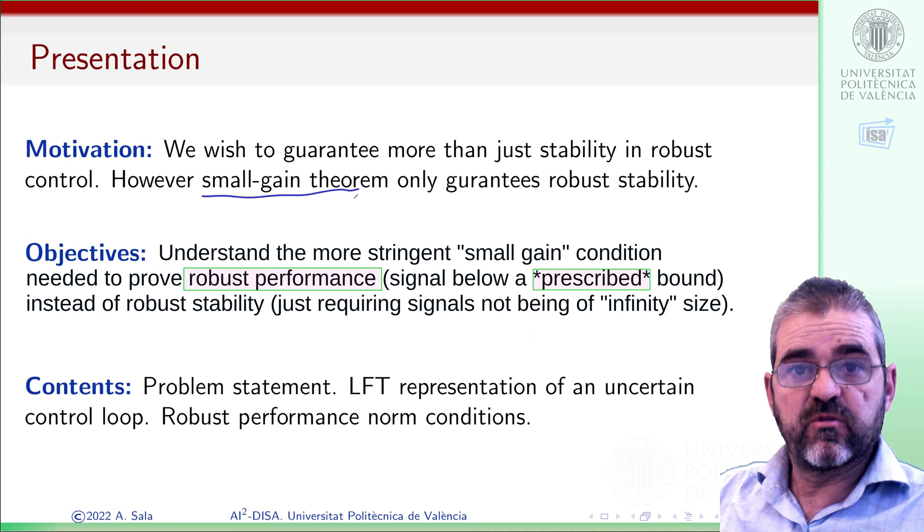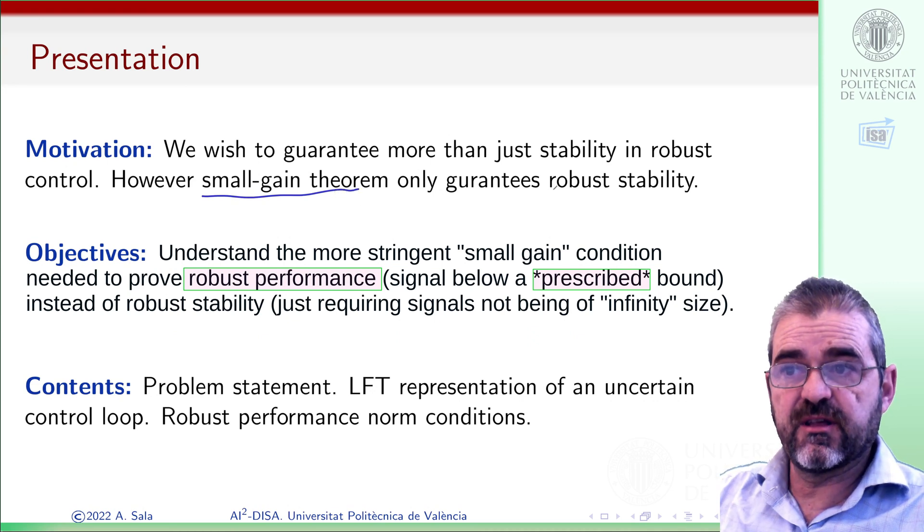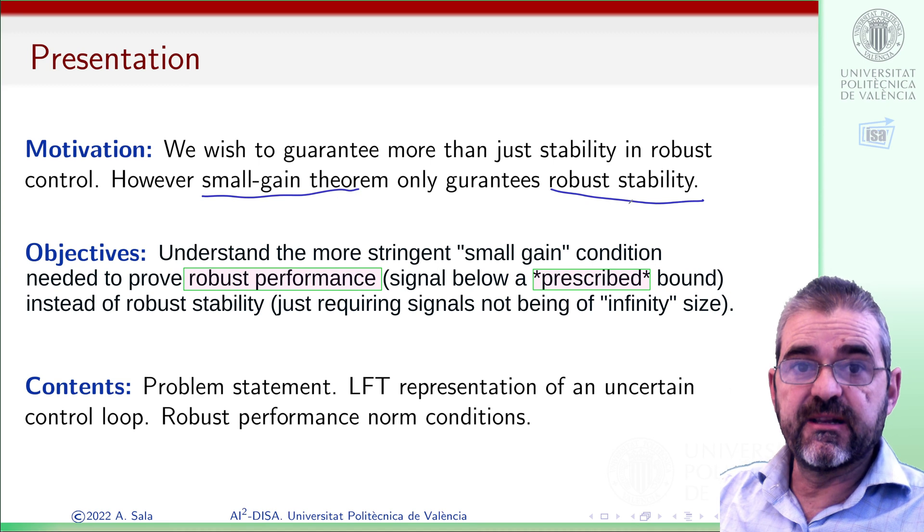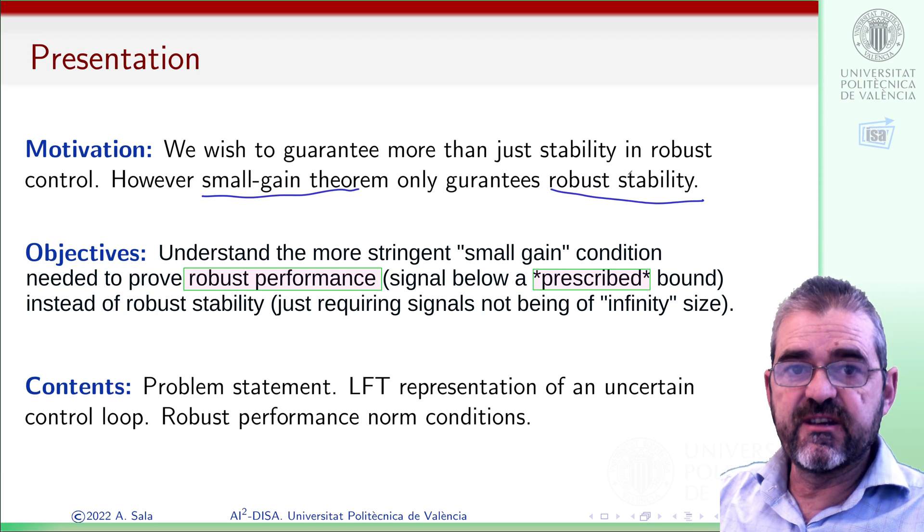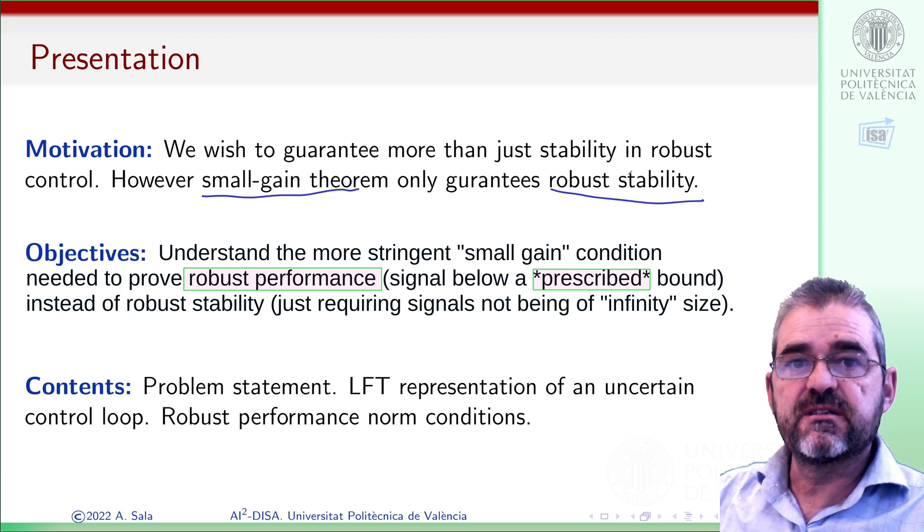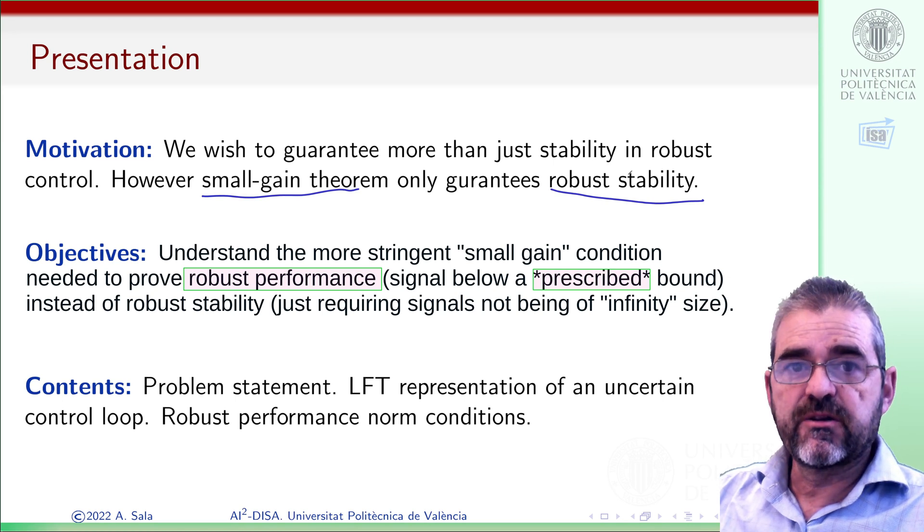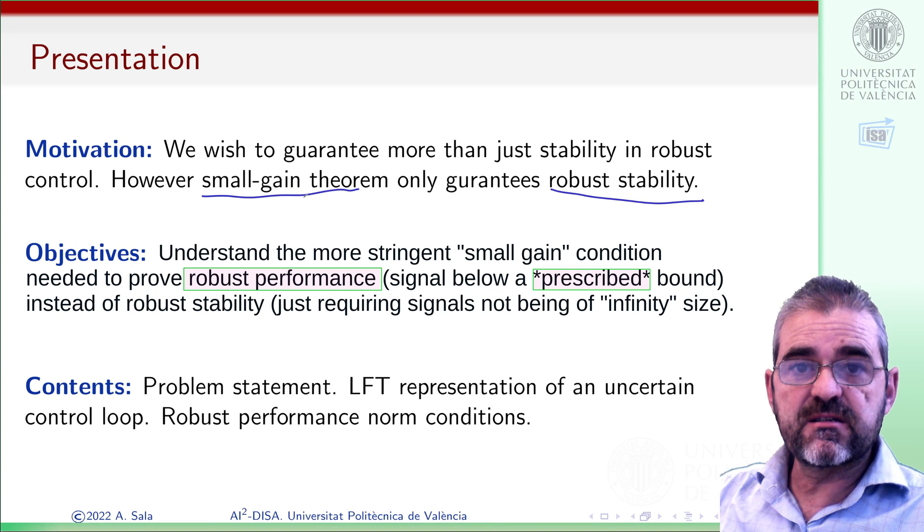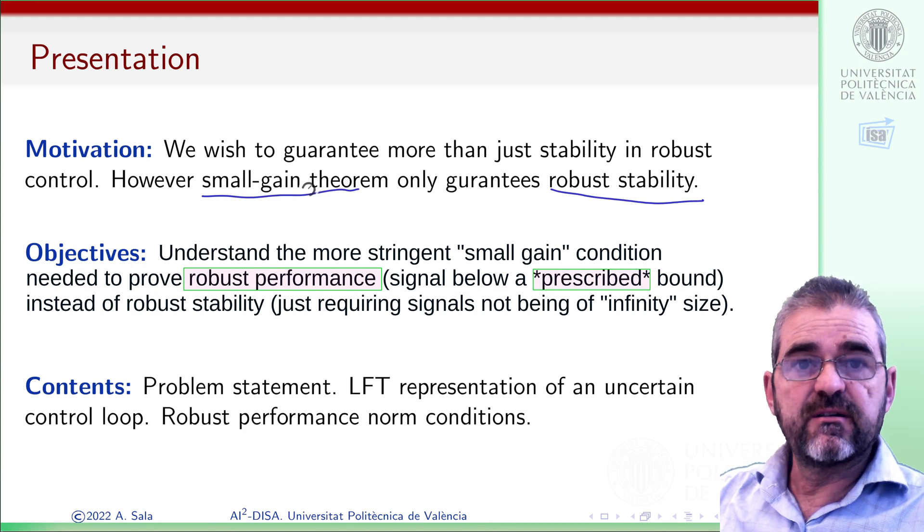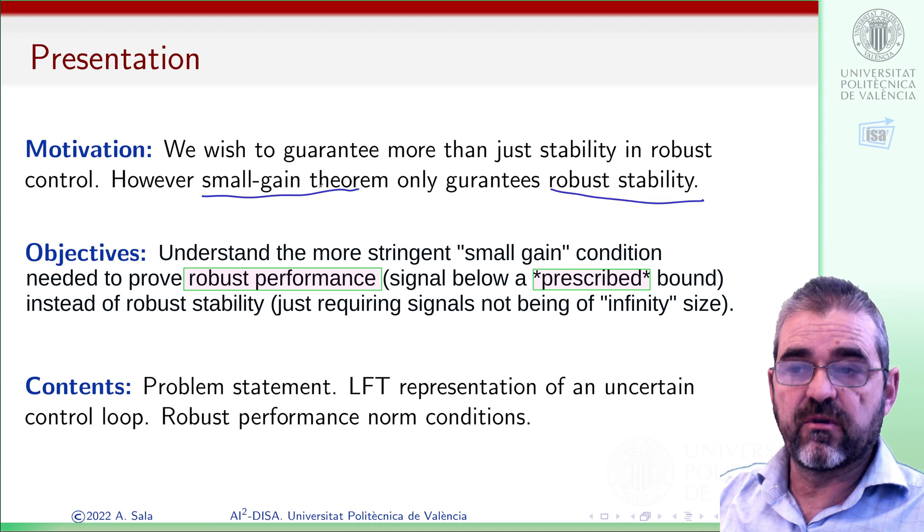We already know from previous materials the importance of the small gain theorem, but that guarantees robust stability—just stability in the face of modeling errors, so signals below infinity, but not robust performance, signals below a given finite size. So in this video, we'll refine the ideas in this small gain theorem to derive small gain conditions for robust performance.